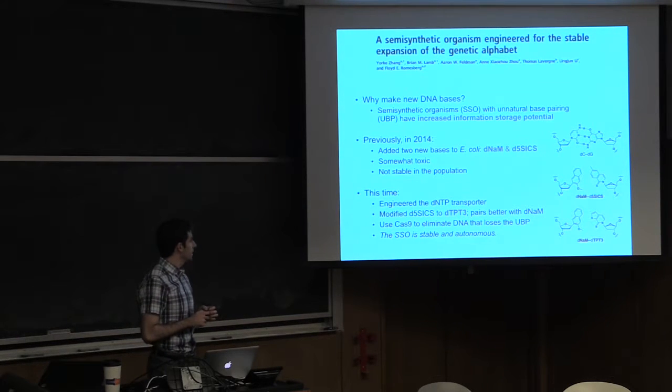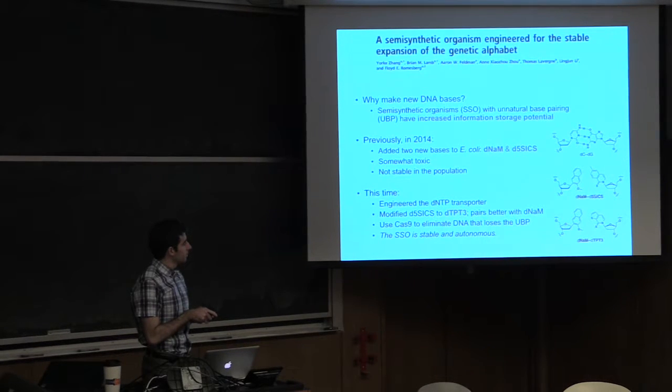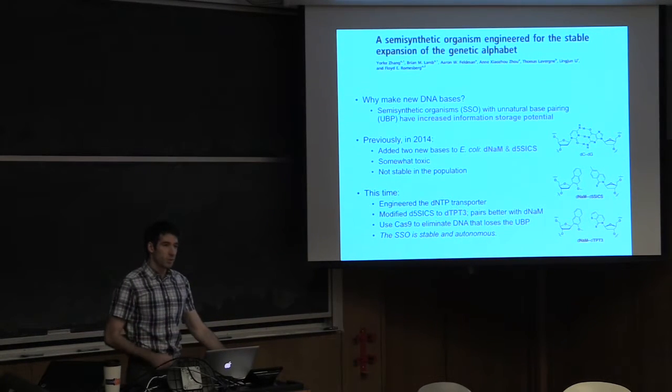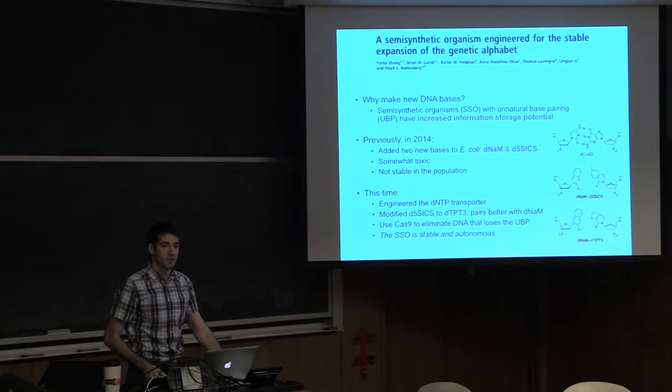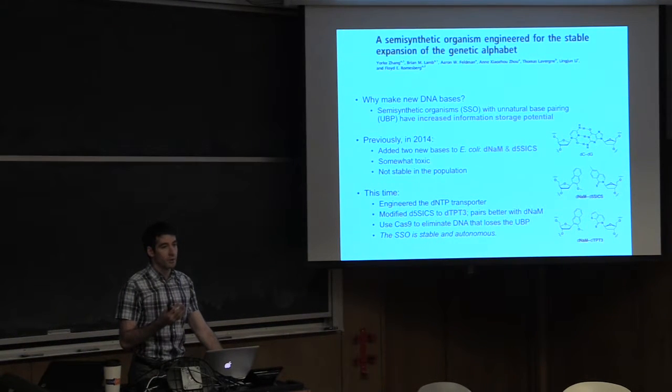And so previously in 2014, what this group did is they added two new bases to E. coli. And so this is a regular C-G pairing, this is a modified one, and they found it was somewhat toxic to the cells when incorporating their genome. And additionally, even for those cells that did survive, because they grew slower, eventually they were out-competed in the population that didn't make it through.